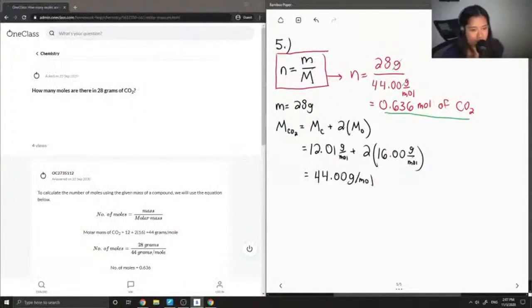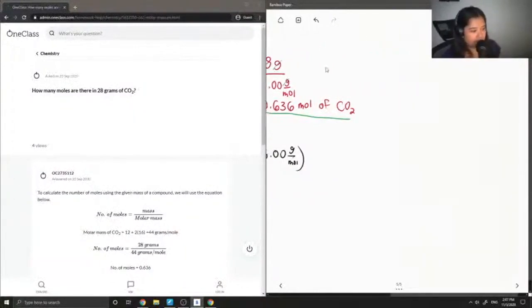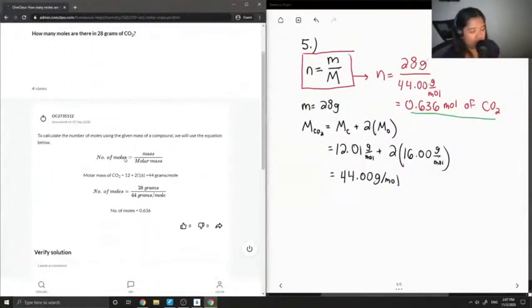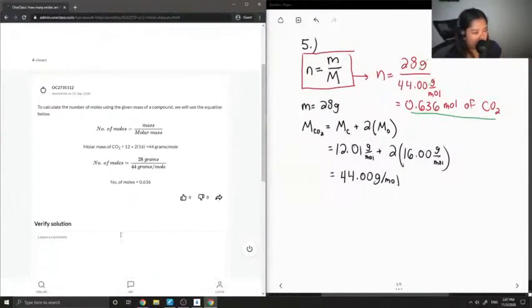Let's see what our junior tutor said. To calculate the number of moles using the given mass of a compound, use the equation: number of moles equals mass over molar mass. They calculated the molar mass of CO2, did 28 divided by 44, and got 0.636 moles. This solution is correct.